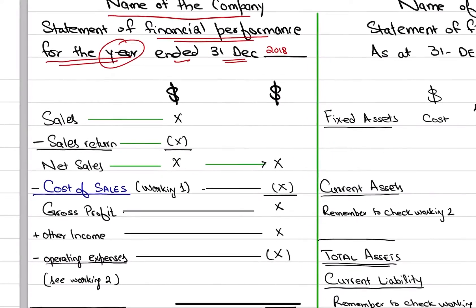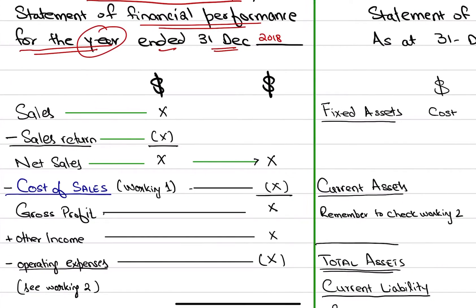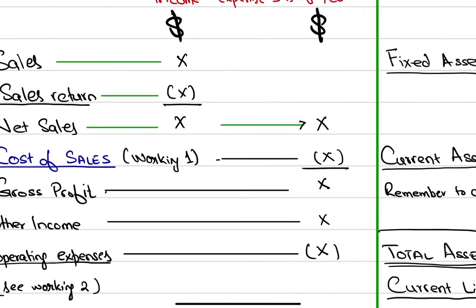The format is very simple. Performance is income and expenses — what was our income and our expenses? If we subtract them, we know whether the company has made a profit or a loss. If it is a good performance, then it is a profit; if it is a bad performance, it is a loss. Straightforward.